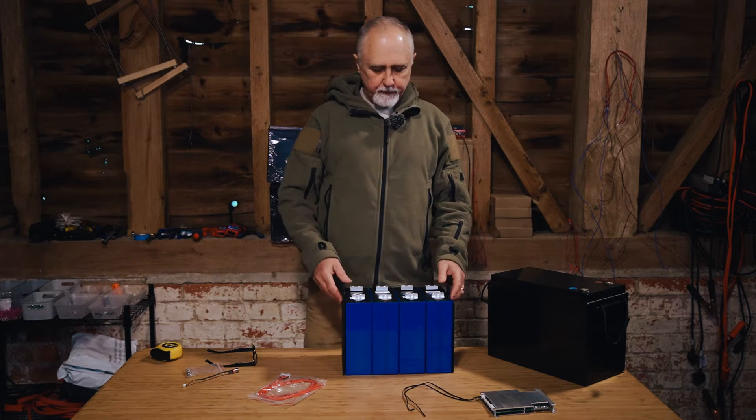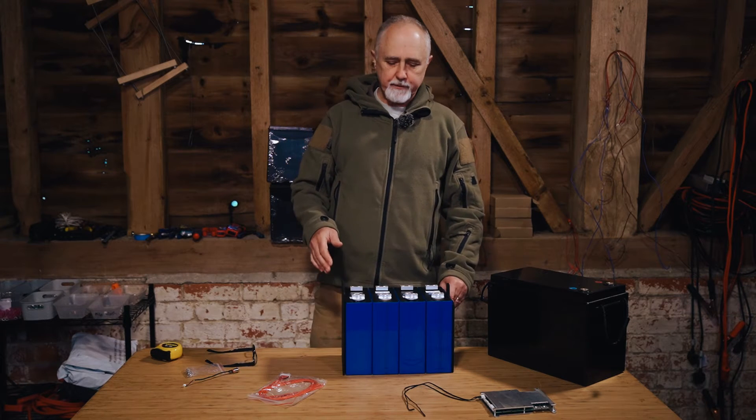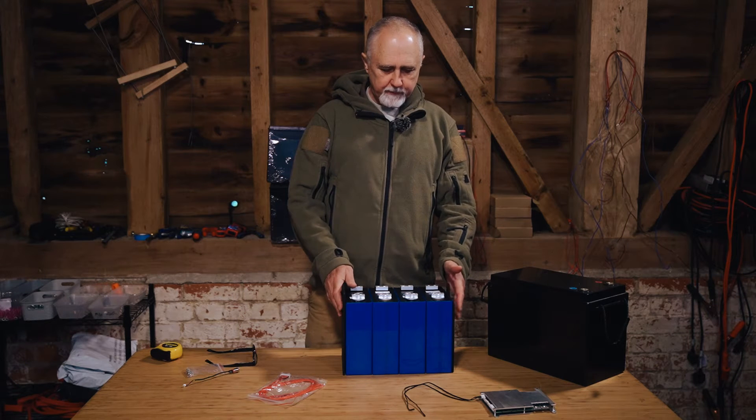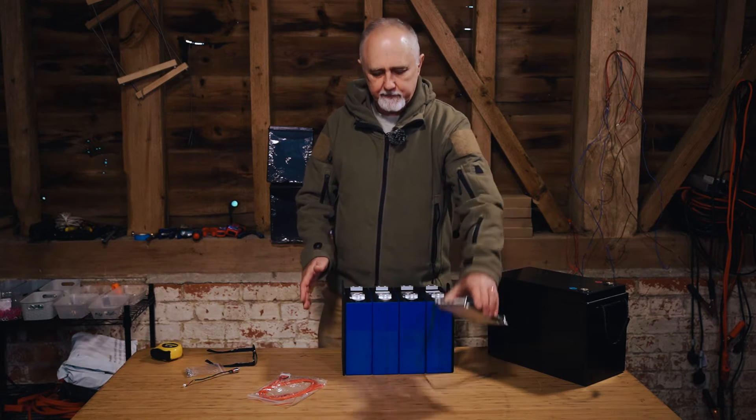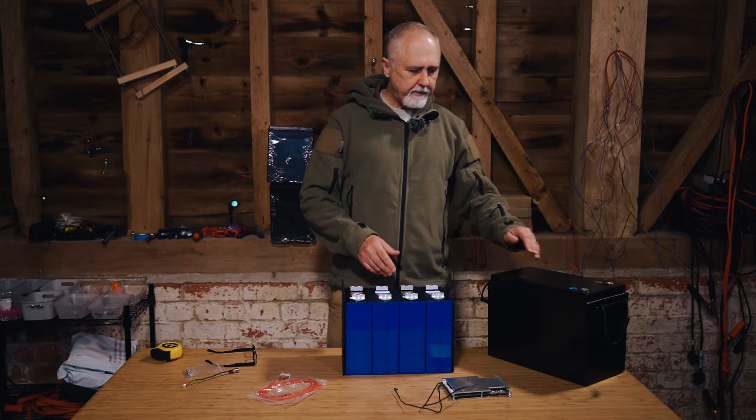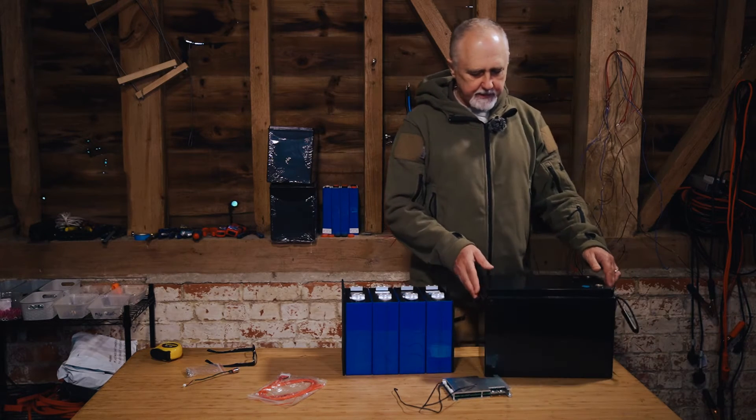Hi folks, I'm Roger from Off Grid Van Life and in this episode we are going to be building out this 280 amp hour battery with a JK Smart BMS with active balancing to fit into a standard battery replacement size.